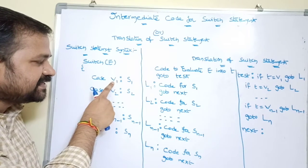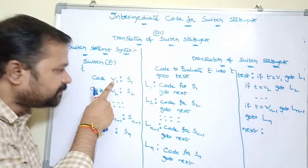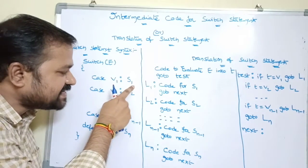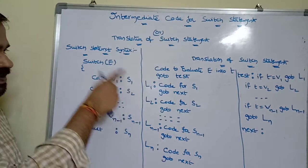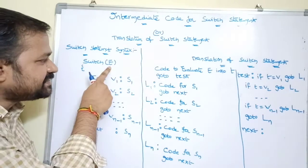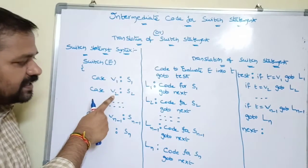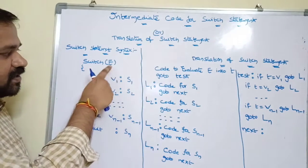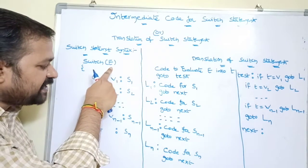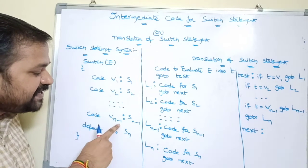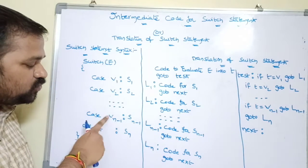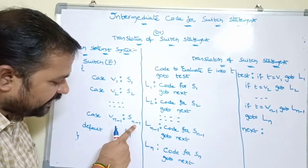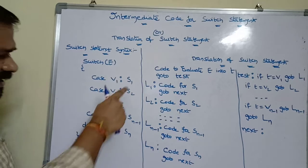The expression is evaluated first. If the expression result matches case value v1, then statement block s1 will be executed. If it matches v2, then s2 will be executed. If it matches vn-1, then the corresponding statement block sn-1 will be executed.